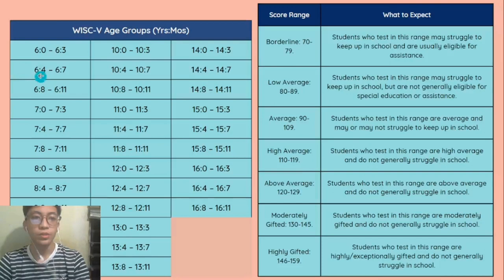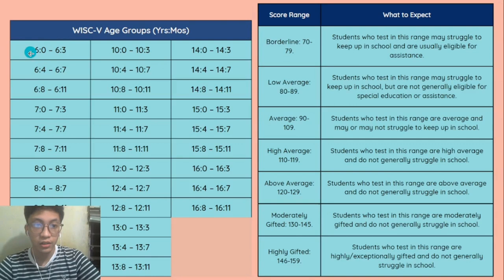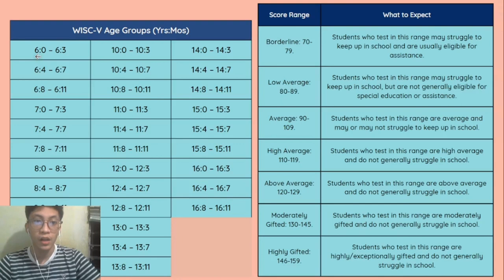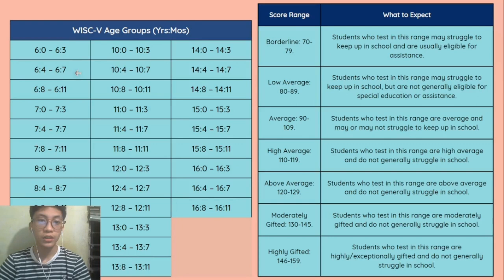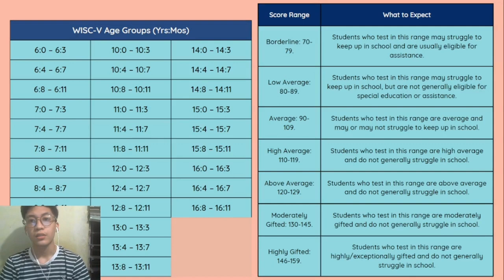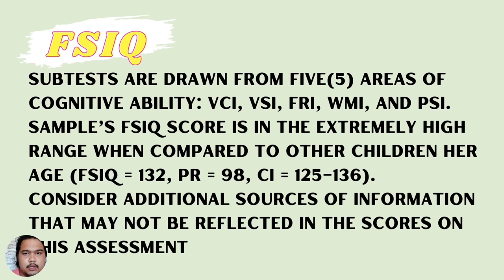There are five age groups measured in years and months. Scores are compared between children who took the test within four months of their birthday. For example, a child who is 6 years old and took the test within their birth month versus a child who is also 6 years old but took the test three months after their birth date — represented as 6-4 versus 6-7, all within four months of their birth month.